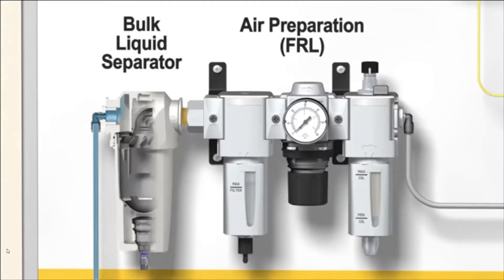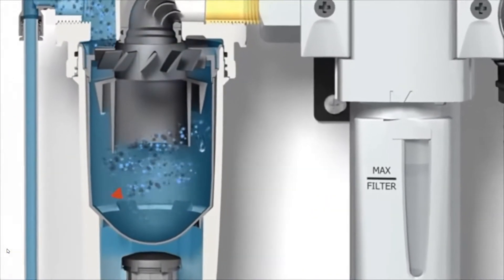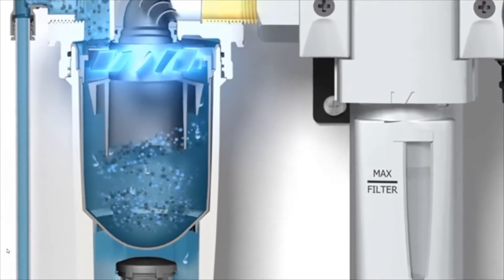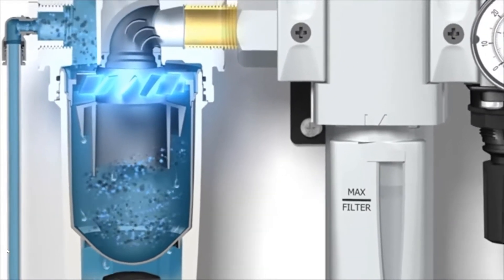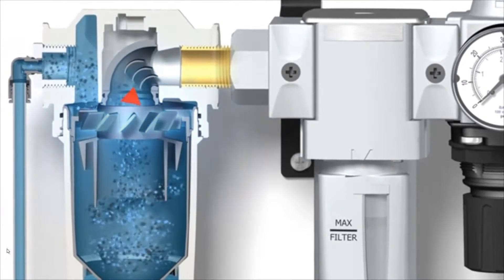Typically, the first unit in the air preparation system is what is called a bulk liquid separator, which circulates or spins the air using specially shaped veins. The rapid circulation of the pressurized air sheds unwanted moisture due to centrifugal force.